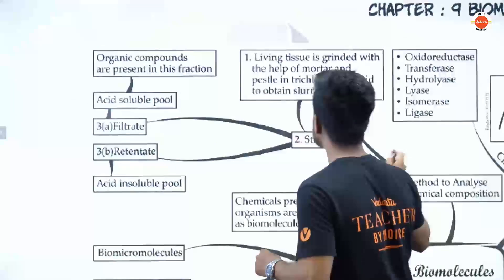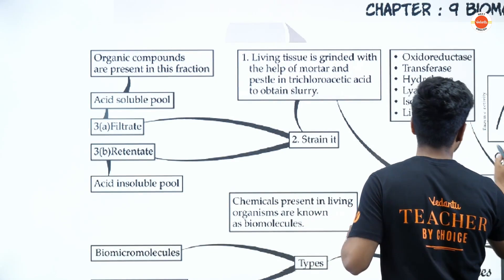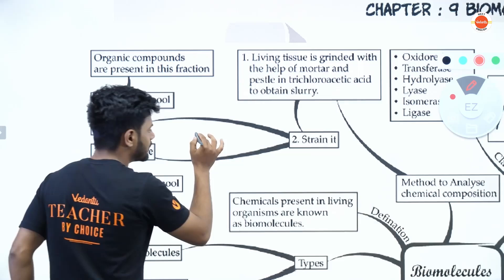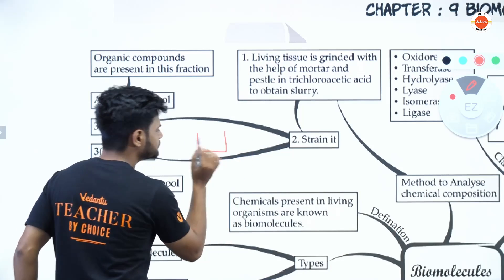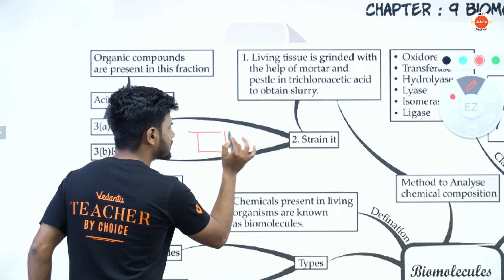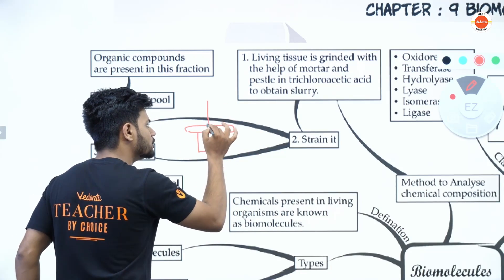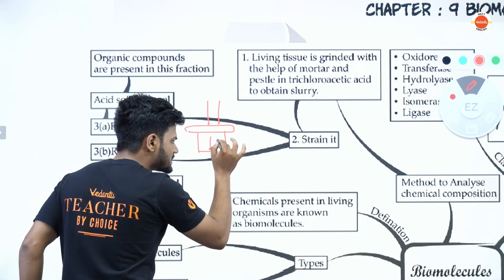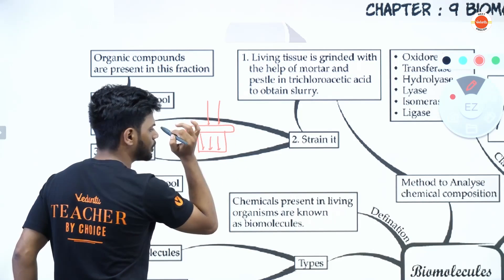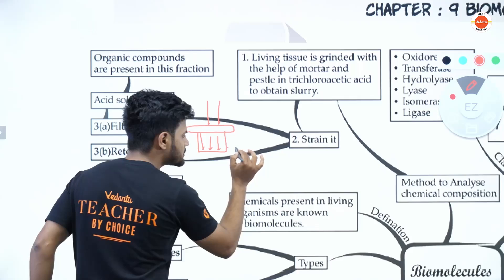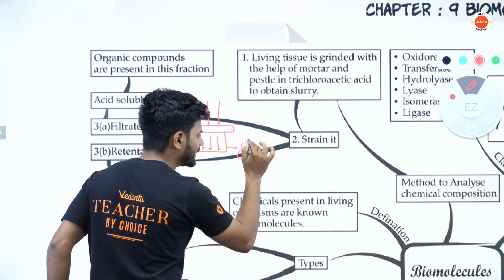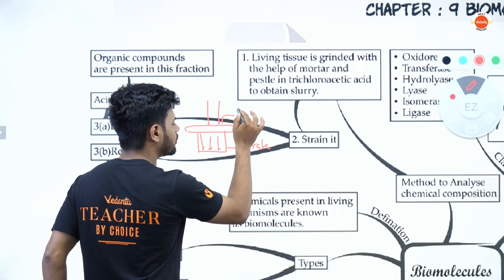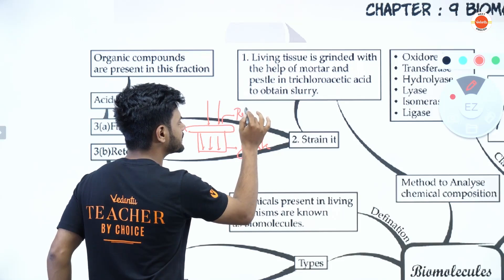When you obtain a slurry, you need to strain it with the help of a muslin cloth. Imagine this is your beaker — you place a muslin cloth on top and add your slurry onto it. Some amount of slurry will slide down, and this part is called your filtrate. What remains on top is called the retentate.